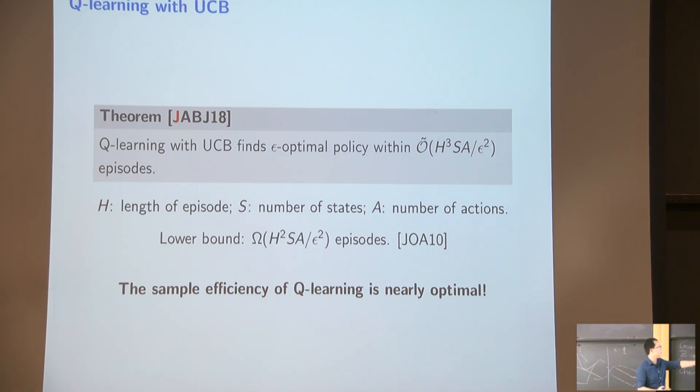And secondly, we can also look at the lower bound. This lower bound is not only about Q-learning. It's like any algorithm, information theoretically cannot find the epsilon optimal policy. In the worst case, if I use less than H squared sA over epsilon squared episodes. What that means is you compare this lower bound with our upper bound, you see the only difference is 1H. So that means other than this one factor of length of episode, the very simple algorithm Q-learning, as long as you do the exploration correctly, you can already achieve almost optimal sample efficiency. This is the second takeaway.